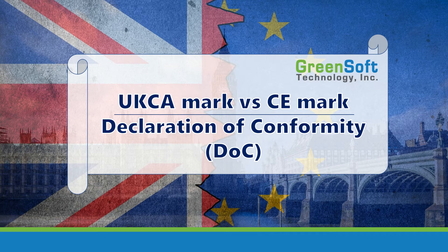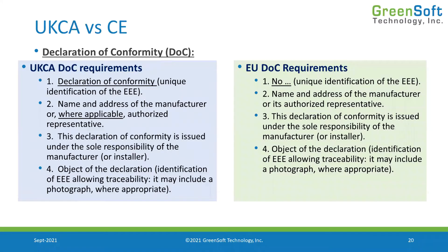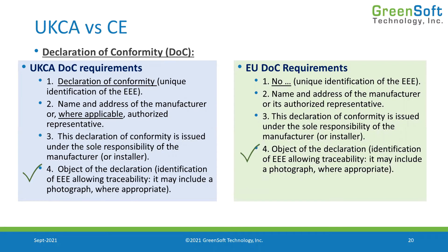Now let's move on to Declaration of Conformity. What I've done is I went and looked at the list of requirements that are published in the regulations as far as what's required in the Declaration of Conformity and analyzed those to see if there are any variances. As I go down the list, there really aren't — we are in alignment. Number one: unique ID of the EEE. Number two: name and address of manufacturer or authorized representative. Number three: a statement that the declaration is issued under the sole responsibility of the manufacturer or installer. Number four: object of the declaration, which may include traceability information — model number, serial number, lot number, etc.